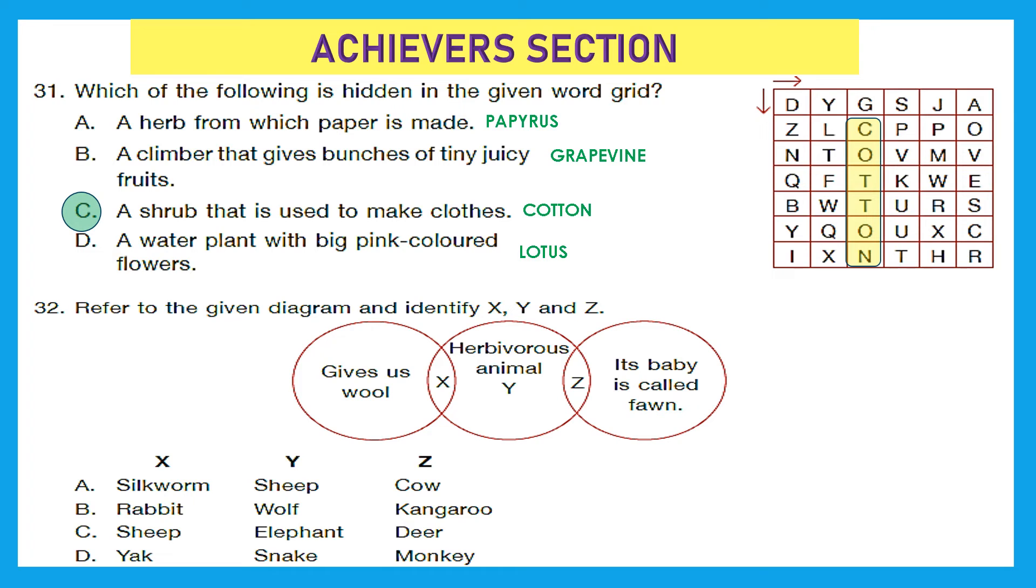Question 32. Refer to the given diagram and identify X, Y and Z. So let's see the Venn diagram. It gives us wool. That could be sheep, right? Because it is also herbivorous animal. So X also gives us wool and X is also herbivorous animal. So sheep matches the category because sheep gives us wool and it also is a herbivorous animal. Now Y is only herbivorous animal, does not give us wool and its baby is not called fawn. So option C, Y also matches because elephant is herbivorous animal. Now Z is herbivorous animal and its baby is called fawn. Whose baby is called fawn? It's deer. Option C is the right answer. So X as sheep, Y as elephant and Z as deer.